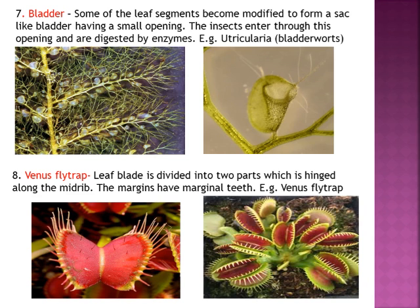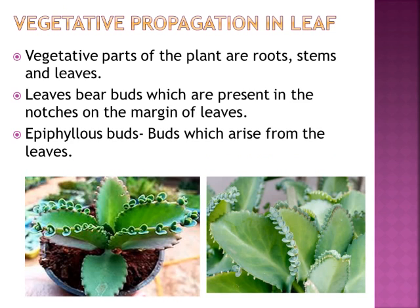The last topic in this chapter is vegetative propagation in leaves. You studied vegetative reproduction in class 5 — it is one and the same. Vegetative parts of the plant are roots, stems, and leaves — they form the main body of the plant and are not involved in reproduction in all plants. The reproductive part of the plant is the flower, which helps in reproduction through formation of fruits and seeds.